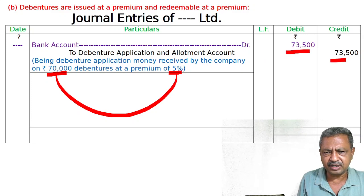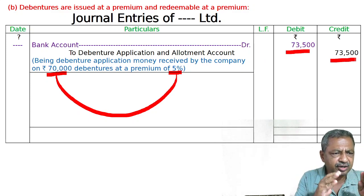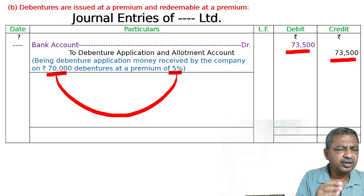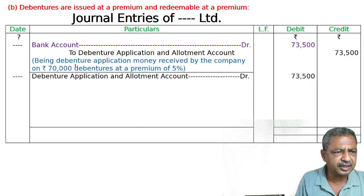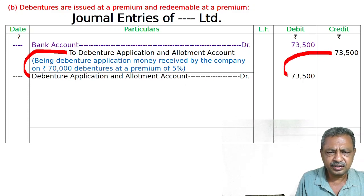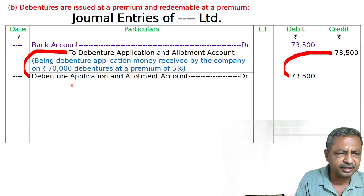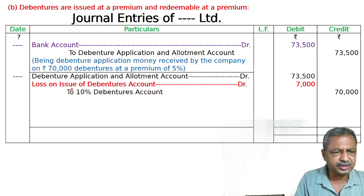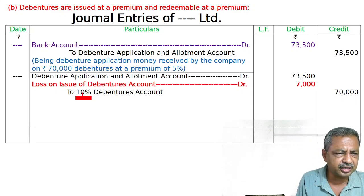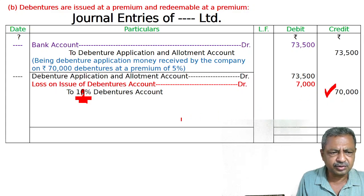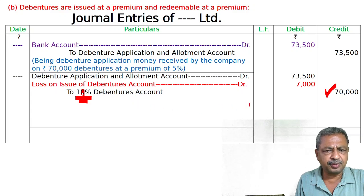To Debentures Application and Allotment Account: 70,000 ke debentures issued at a premium of 5%. 70,000 ka 5% is 3,500. 70,000 plus 3,500 equals 73,500. Narration: debenture application money received on Rs. 70,000 debentures at a premium of 5%. Then Debenture Application and Allotment Account debited 73,500. To 12% Debentures Account 70,000 par value, and to Securities Premium Account 3,500.